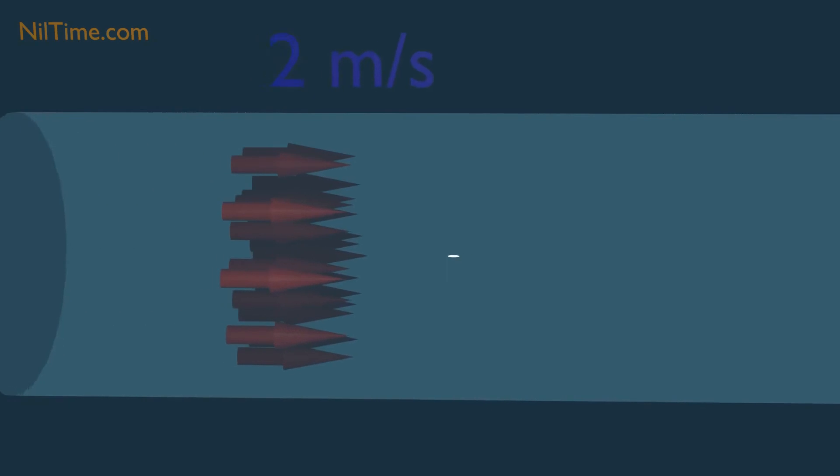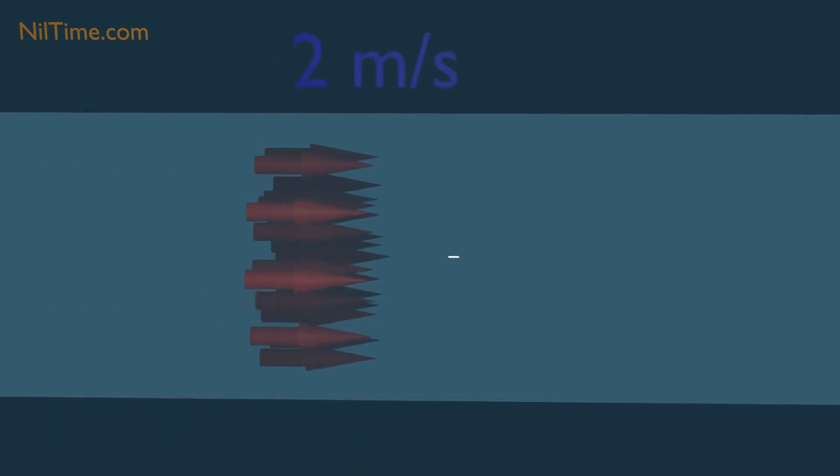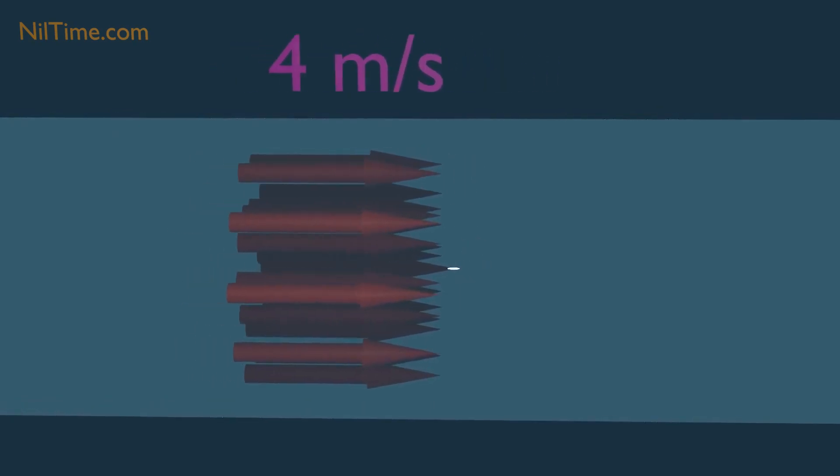But in this condition, the inlet and outlet position of velocity changes within the tube, which makes it non-uniform flow.